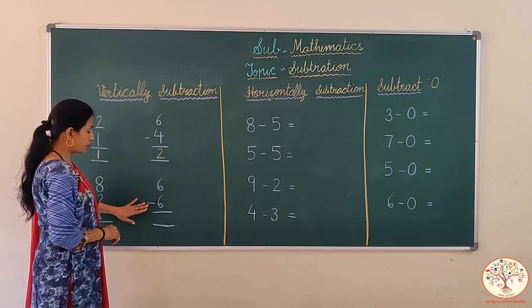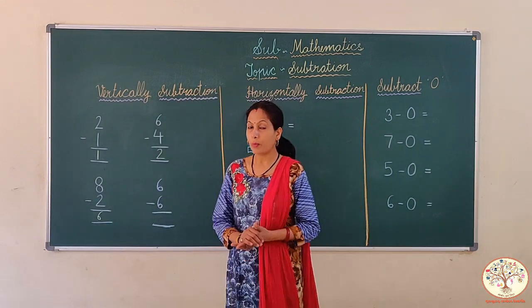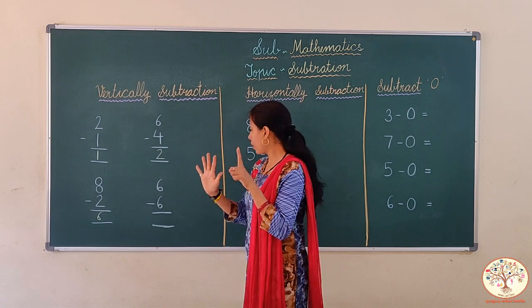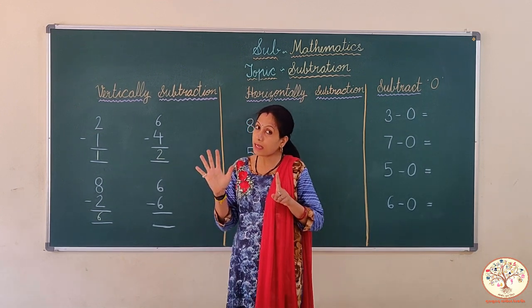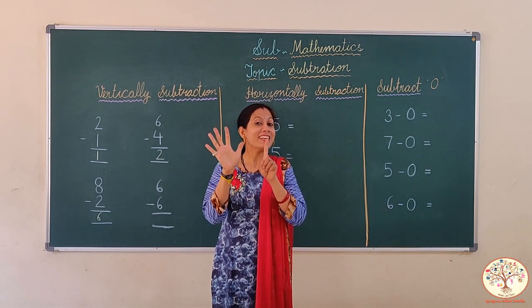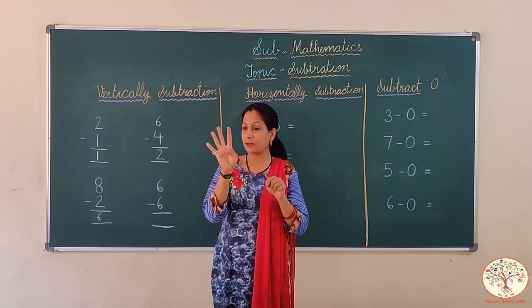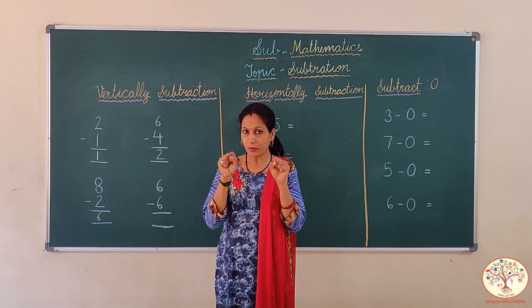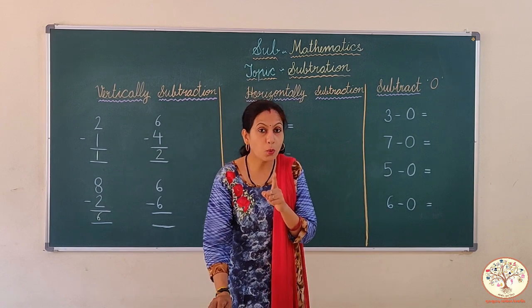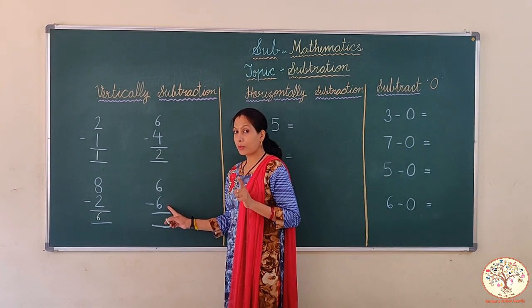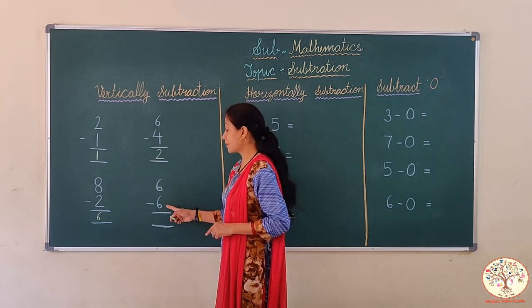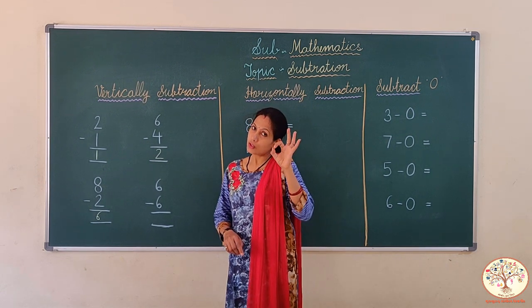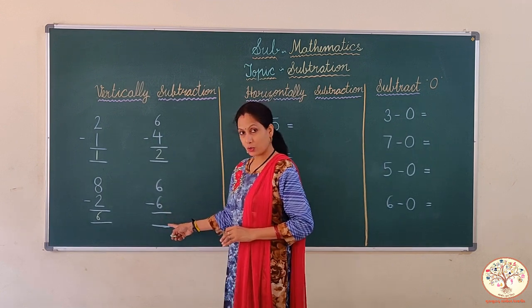Now 6 minus 6. We will do it again with the help of fingers. Open your 6 fingers: 1, 2, 3, 4, 5, 6. Now we need to minus 6. 6 में से 6 minus करना है — तो सारी fingers close हो गई, कोई भी open नहीं है. तो हमारे पास क्या बचा? 0. जैसे 1 में से 1 minus हो जाए तो 0, उसी तरह आपके पास 6 toffees थीं, आप 6 पूरी finish कर लो, तो 0 बचेगा. 6 minus 6 is equal to 0.